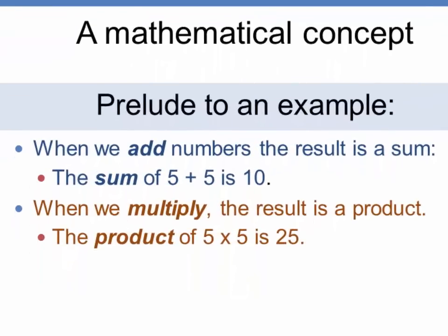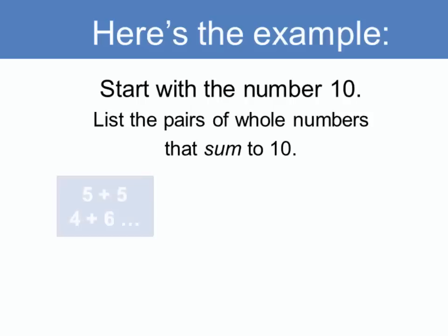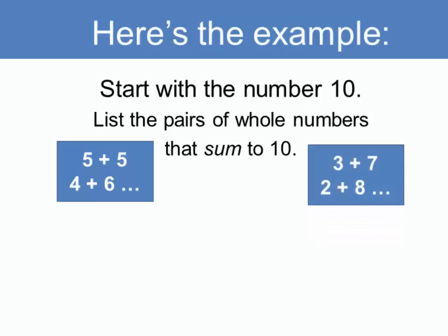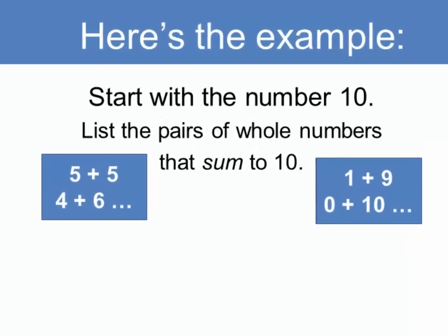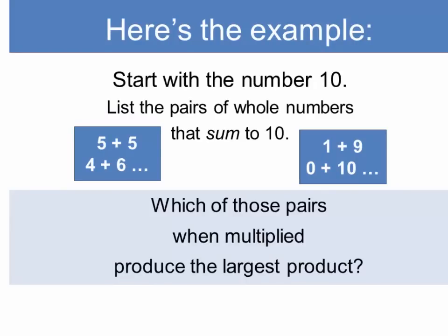So here's our example. We start with the number 10, and then we list the pairs of whole numbers including 0 that sum to 10. This might be 5 plus 5 equals 10, and 4 plus 6 equals 10, similarly 3 plus 7 equals 10, and 2 plus 8, 10 plus 0, and 1 plus 9. So we can work out all of those pairs of numbers that sum to 10.